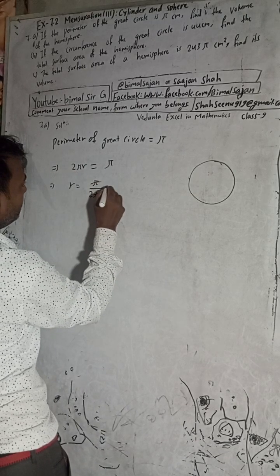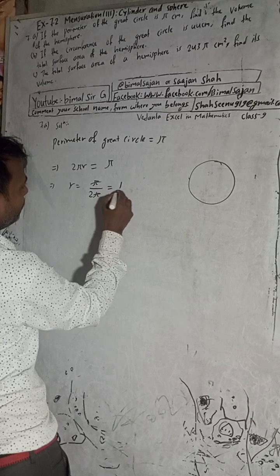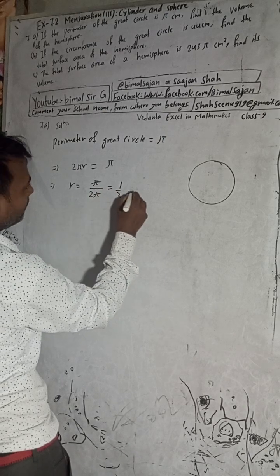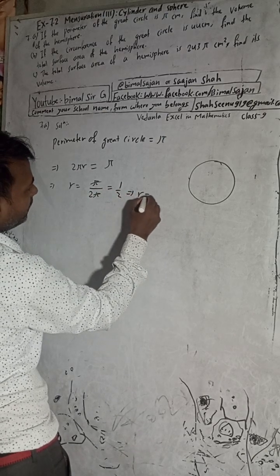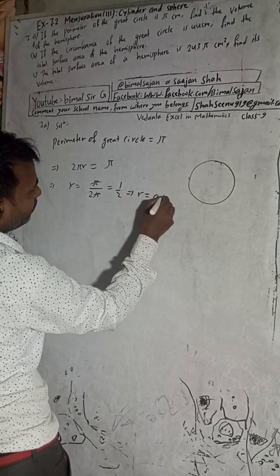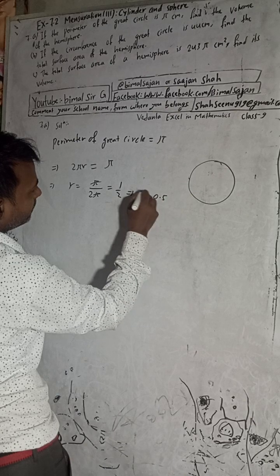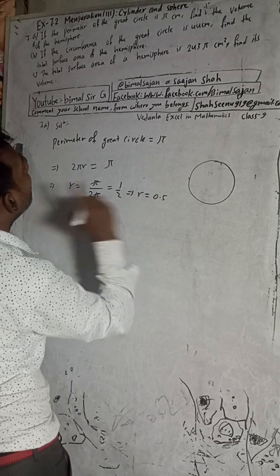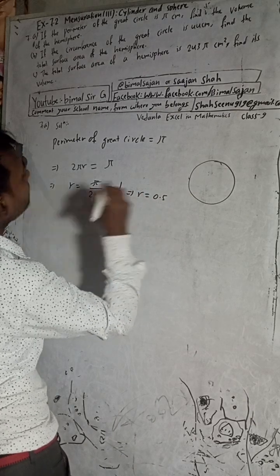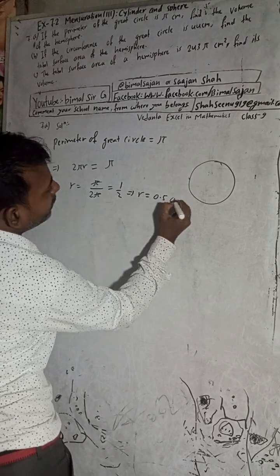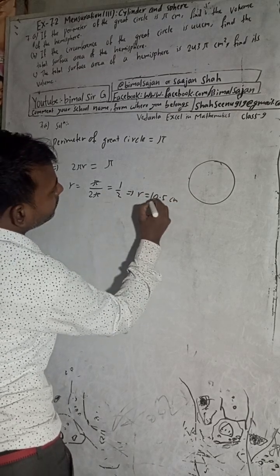Pi cancels out on both sides, giving r equals one by two, that means the radius is equal to 0.5 cm.